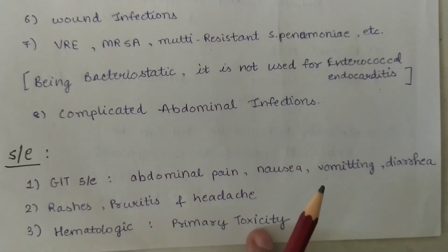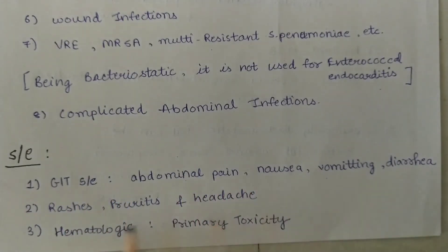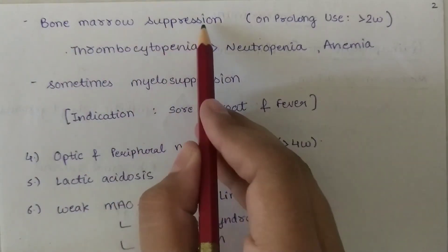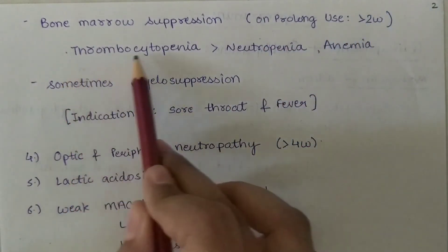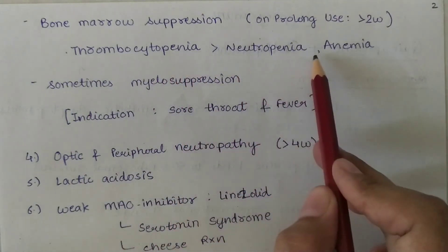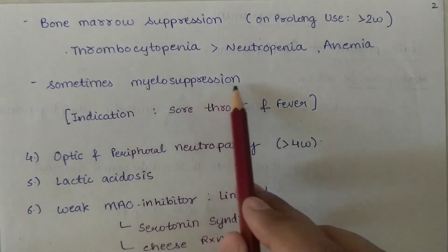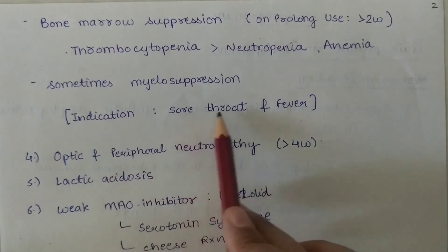Side effects: GIT side effects like abdominal pain, nausea, vomiting, and diarrhea. Second, rashes, pruritus, and headache. Third, hematological manifestations, which are the primary toxicity of linezolid — bone marrow suppression. On prolonged use, approximately more than two weeks, it causes thrombocytopenia more than neutropenia, and also anemia. Sometimes it also causes myelosuppression, indicated by sore throat and fever.